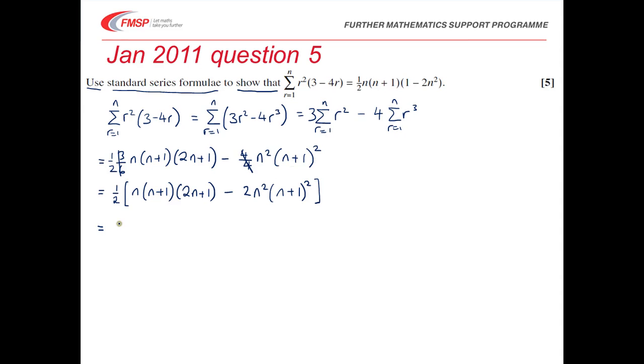Take out factors. So we can see that both terms have a factor of n and a factor of n plus 1. In the first term, that just leaves me with 2n plus 1. And for the second term, that leaves me with 2n times n plus 1.